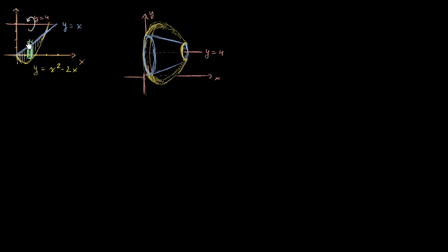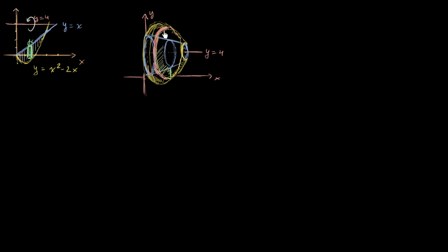We're going to rotate this around the line y equals 4. The inner radius of our washer is going to look something like that, and the outer radius of our washer is going to contour around x squared minus 2x. Our washer is going to have some depth dx. The face of the washer is going to be all of this business shown in green.